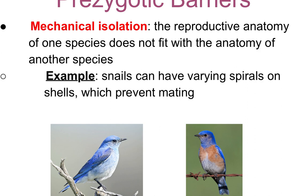There can also be mechanical isolation, where there is just no physical way for mating to happen. The reproductive anatomy of one species does not fit the reproductive anatomy of another. For example, snails can have varying spirals on their shells which can prevent mating. This is also seen in bats: many species of bats live in a bat cave together, but their genitalia have different shapes, making it physically impossible to mate with the incorrect species.